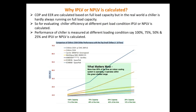Why are IPLV and NPLV calculated if we already have COP and WR to evaluate the performance of a refrigeration system? COP and WR are calculated based on full load capacity — the assumption is that the refrigerator is fully loaded. But in real day-to-day life, our chillers, particularly air conditioning devices, hardly run at their full capacity. Most of the time they are partly loaded, so the values from COP and WR differ from actual performance. IPLV and NPLV are coined in order to take into account this part load performance of the system.